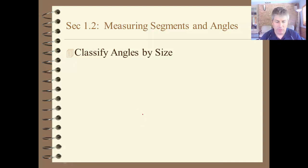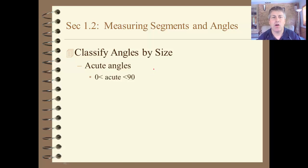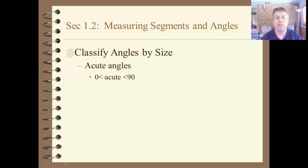We can classify angles by size. An acute angle — and an acute angle is not the angle you take to homecoming, you take a cute girl to homecoming — an acute angle is an angle that is more than 0 degrees and less than 90. Angle A here might be an acute angle.